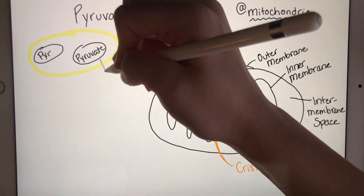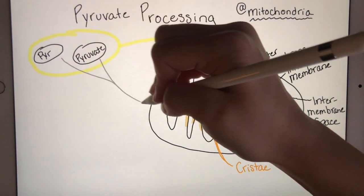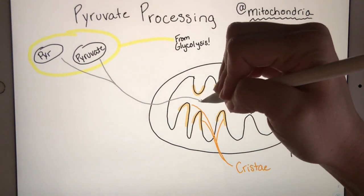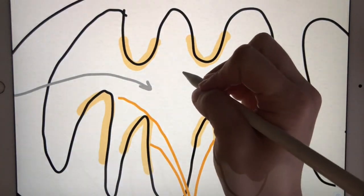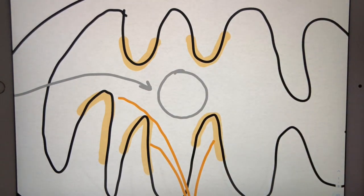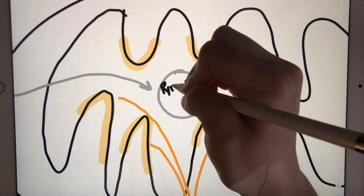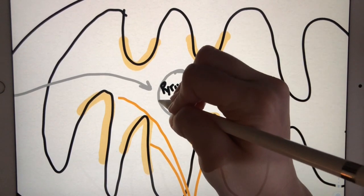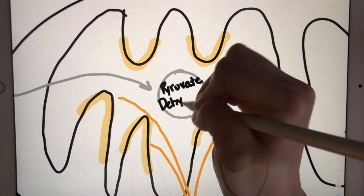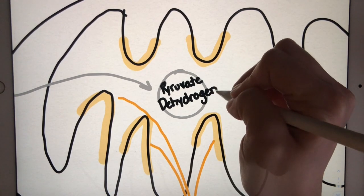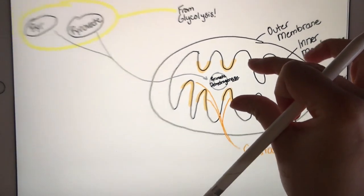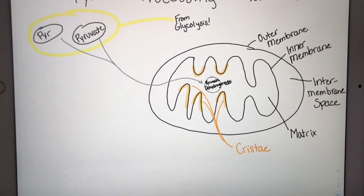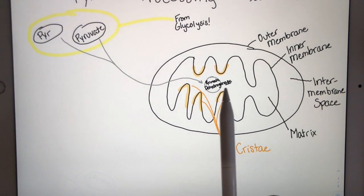To be processed, pyruvate needs to go into the mitochondria to an enzyme complex, which I'm going to represent as a circle, called pyruvate dehydrogenase. That ASE, cluing us in to the fact that this is an enzyme. So pyruvate going into the mitochondrial matrix to pyruvate dehydrogenase.